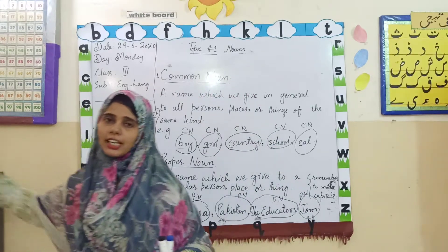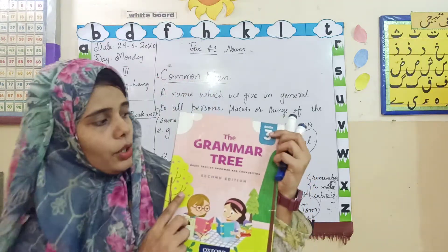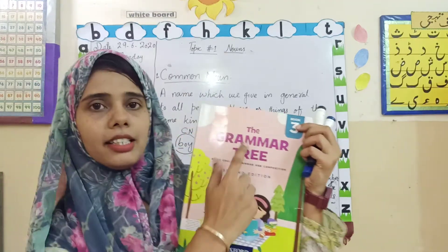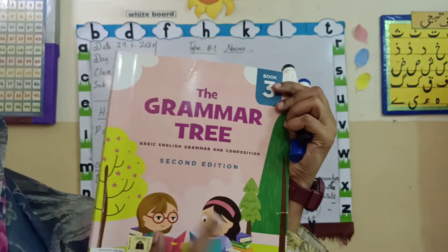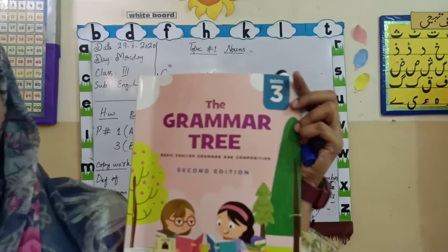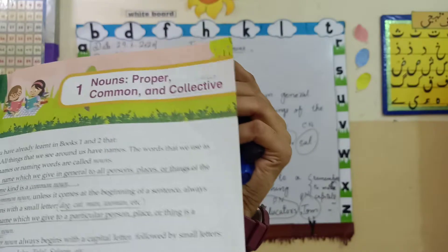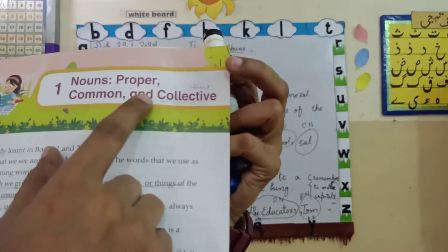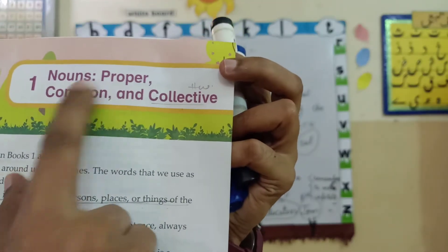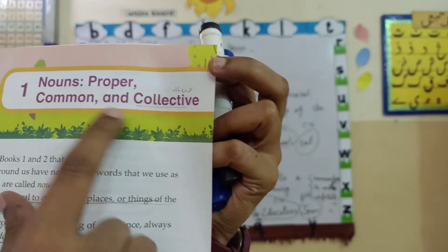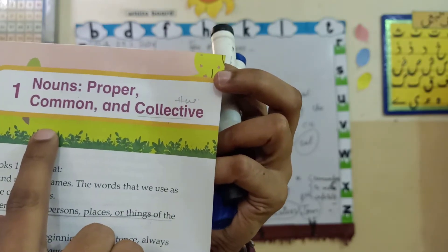This is your English language book. You can see here the grammar tree. Here we are going to learn a new chapter and the first topic is nouns — proper and common noun. There are three nouns but today we are going to learn about proper and common only.